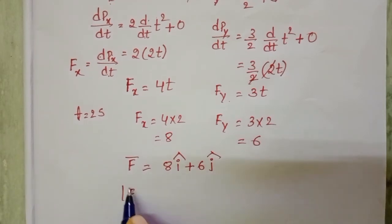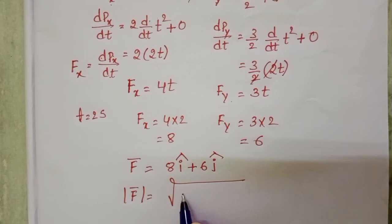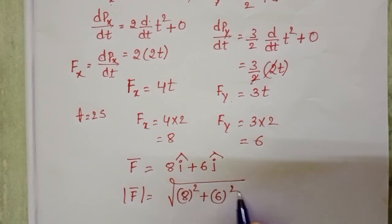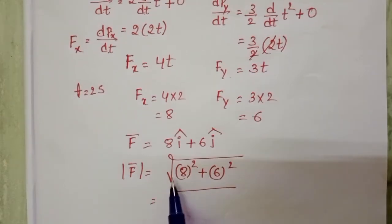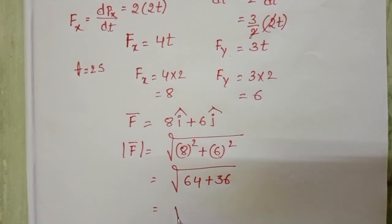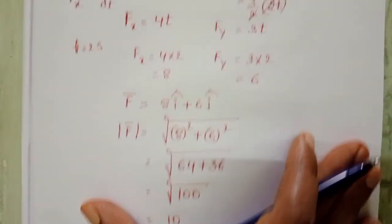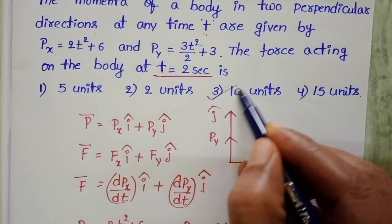The magnitude of the force equals square root of 8 squared plus 6 squared, which is square root of 64 plus 36, equals square root of 100, equals 10 units. Checking the given options, the third option is correct.